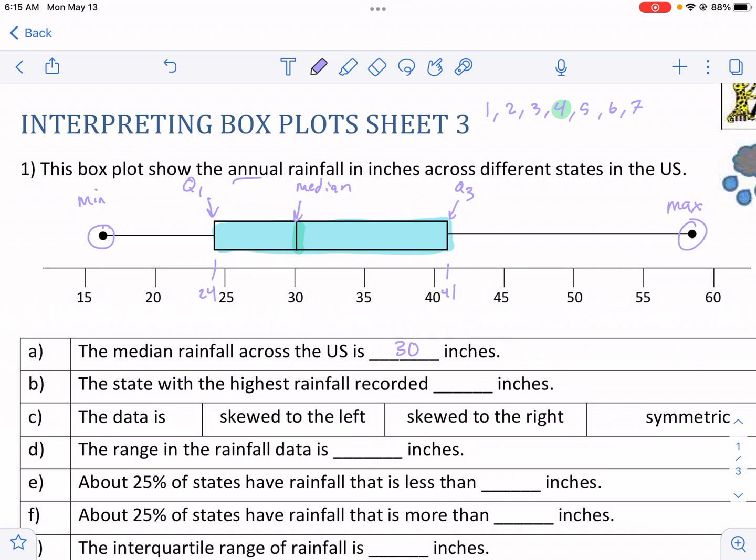The state with the highest rainfall recorded, and looks like this is 50, I think that's 59, 59 inches. So 59 inches, that's the max. Highest equals max.